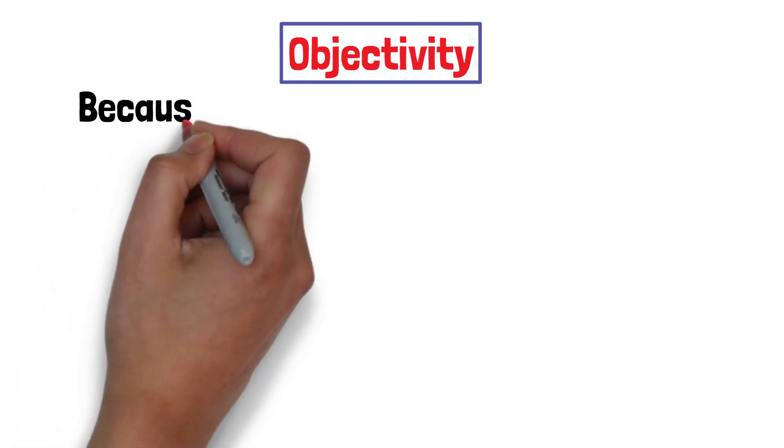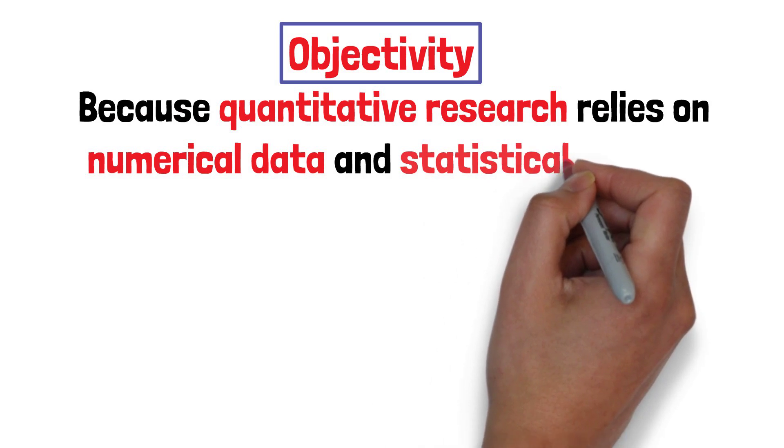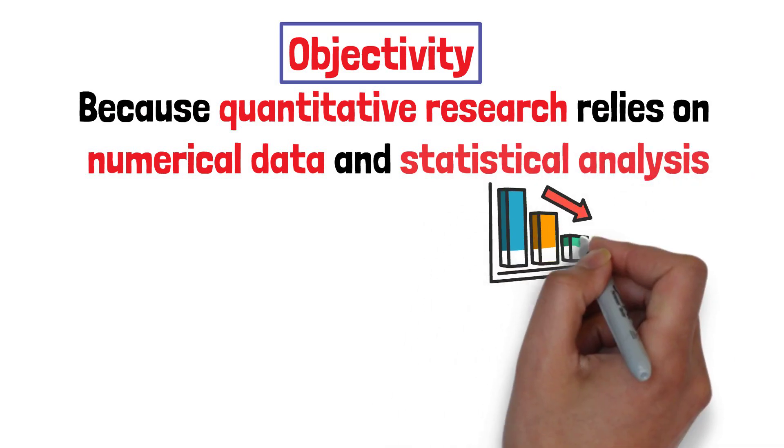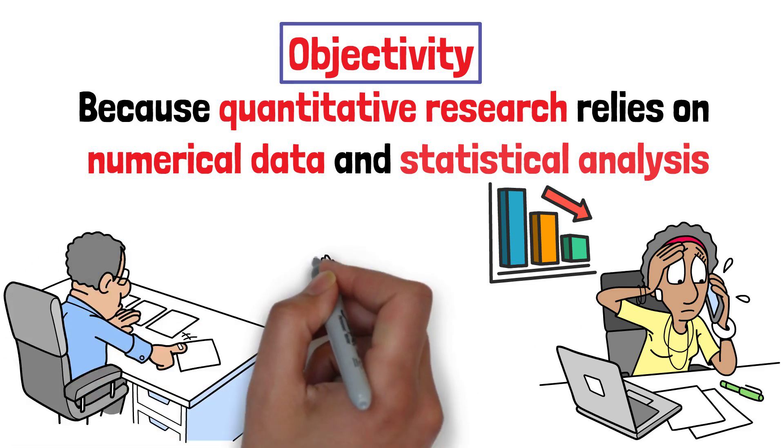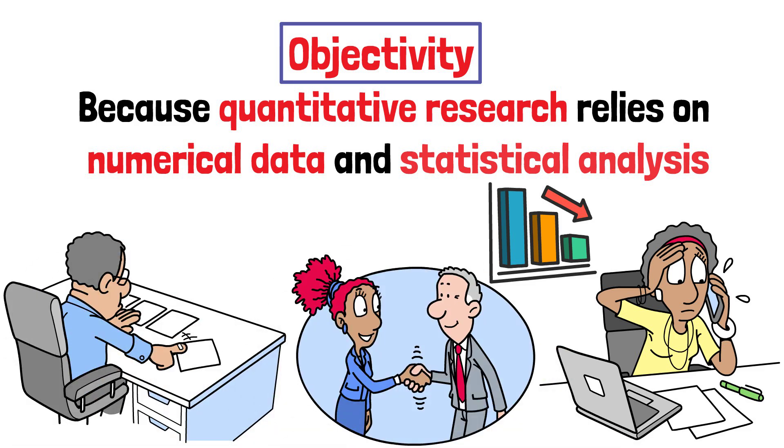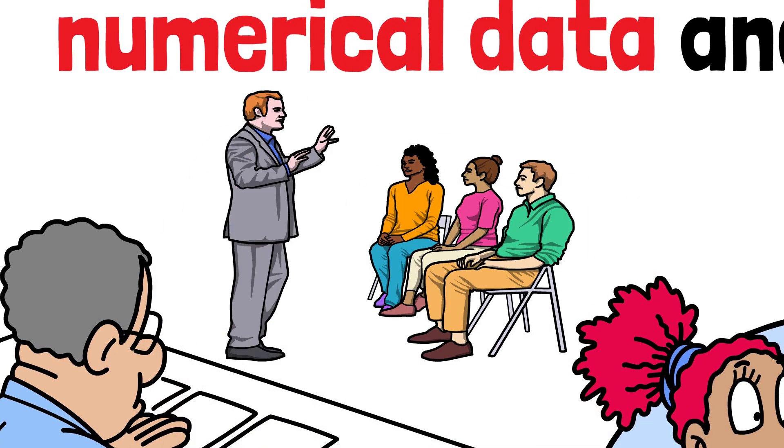Second, objectivity. Because quantitative research relies on numerical data and statistical analysis, it reduces the risk of personal bias influencing the results. The use of standardised tools like surveys or tests ensures consistency, allowing researchers to focus purely on the numbers and outcomes.